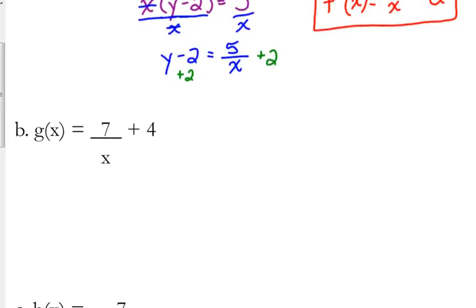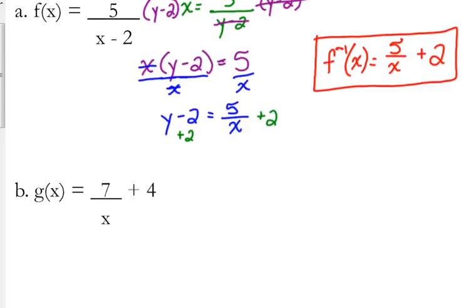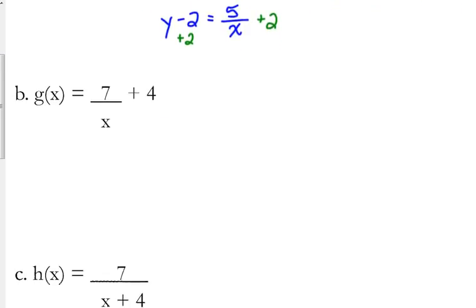So get b. This one looks like the answer we just got, so maybe its answer is going to look like the first problem that we did. Let's see. We've got x is equal to 7 over y plus 4. That plus 4 is not a part of that rational expression, it's there on the end. So we're going to start by subtracting the 4.